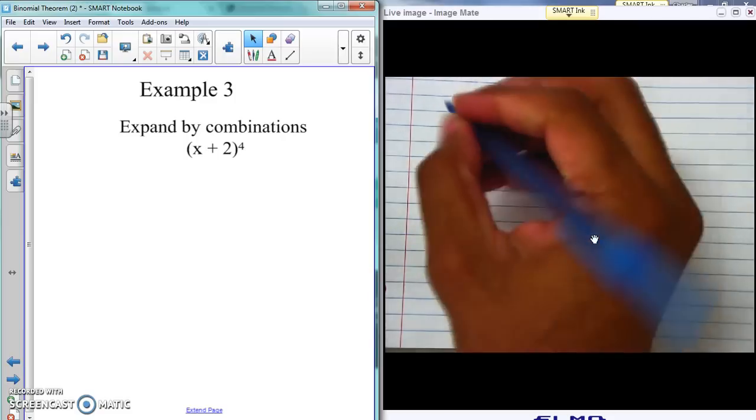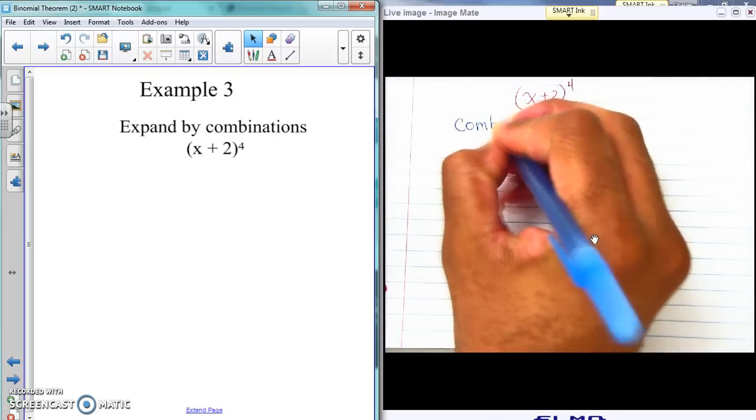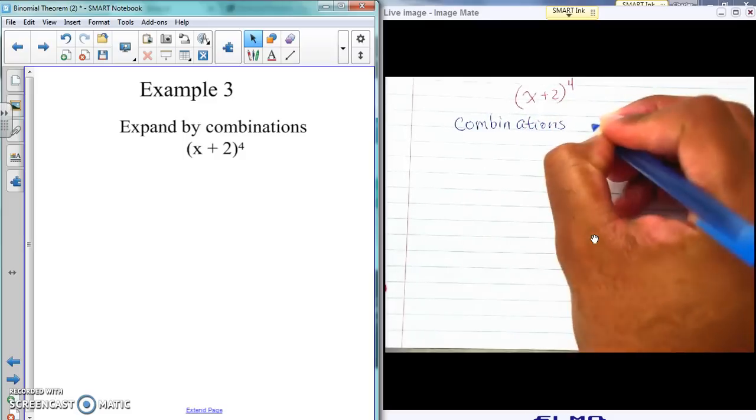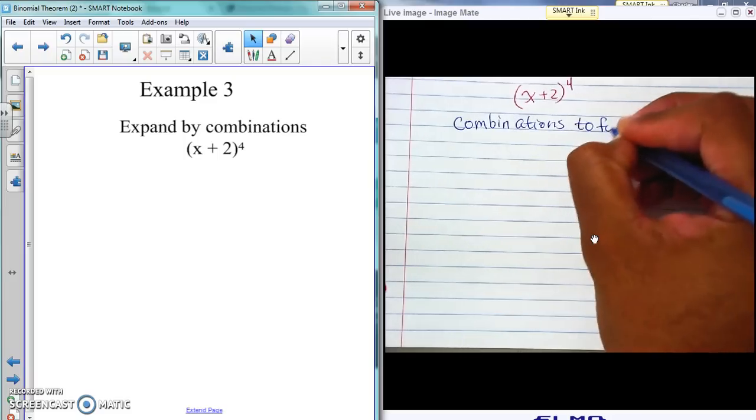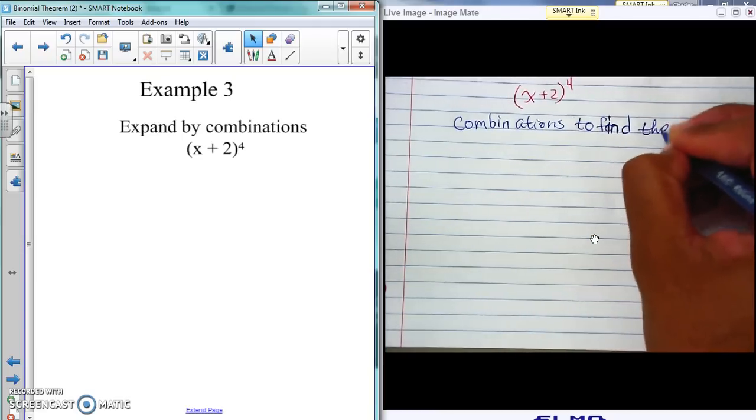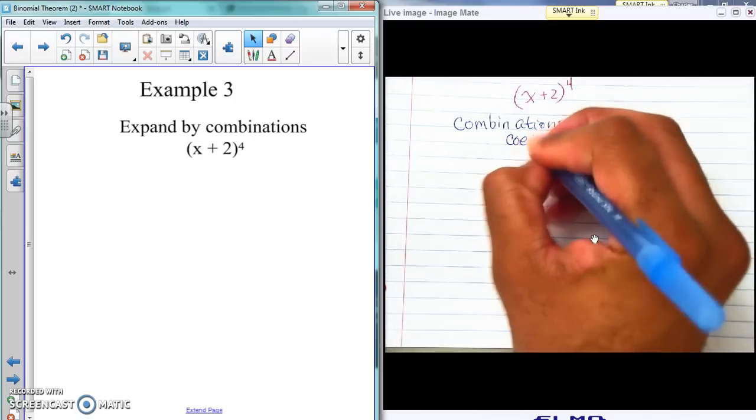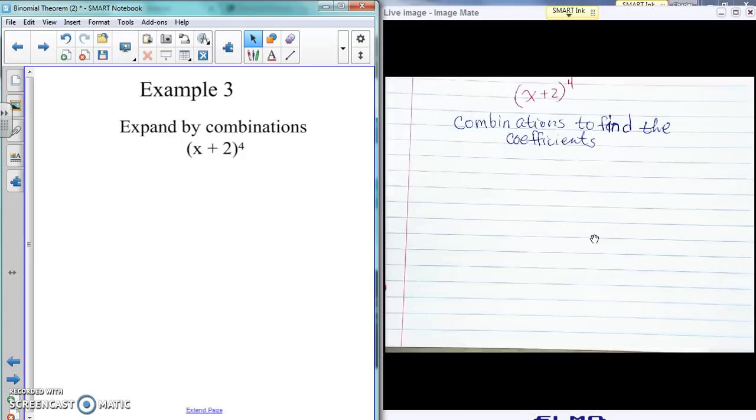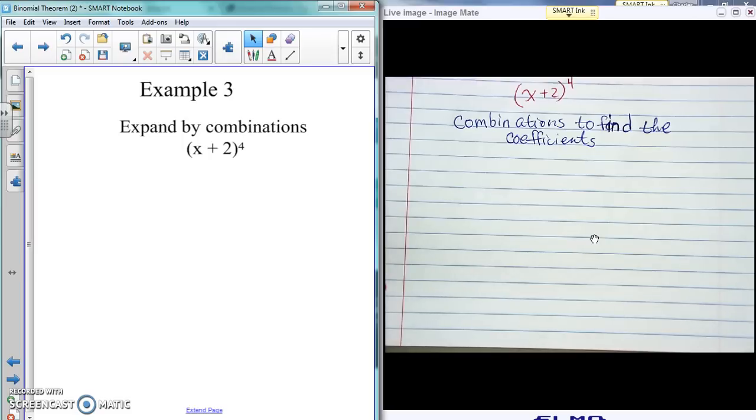So the first thing we're gonna do is start off using combinations to find the coefficients. And that's what Pascal's triangle used to do. But the bad thing about Pascal's triangle is you have to do that triangle every time until you get down to the term that you need. So for example, if they went to the 12th term or the 24th term or the 30th term or 36th term, you'll be sitting there for a long time trying to do all the work because the numbers are gonna start getting huge. Combinations makes that simpler.